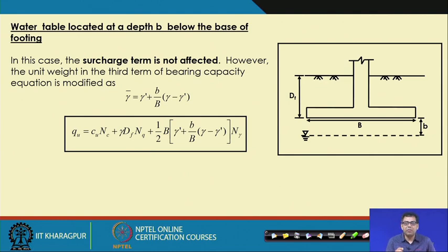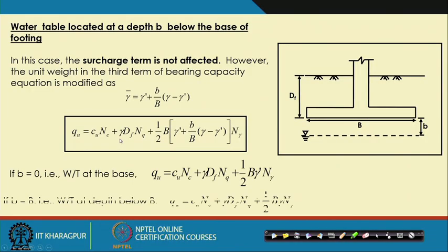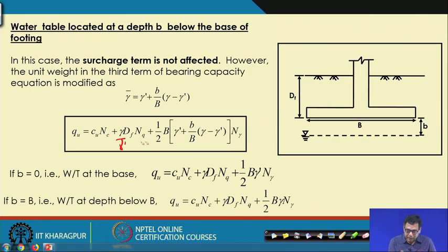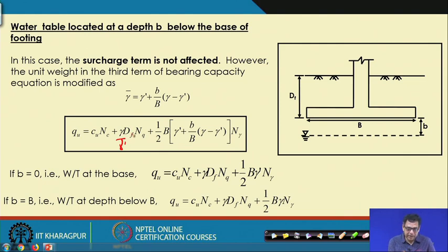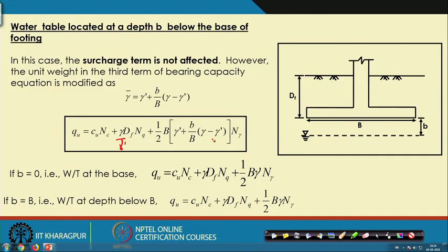If the water table is at or above the ground surface, both gamma values will be gamma_bar (submerged unit weight). If the water table is exactly at the base of the foundation, the gamma in the second term is the bulk unit weight, while the gamma in the third term is the submerged unit weight because that zone is below the water table. I will solve a problem on the water table effect to demonstrate how it is incorporated into the bearing capacity expression.